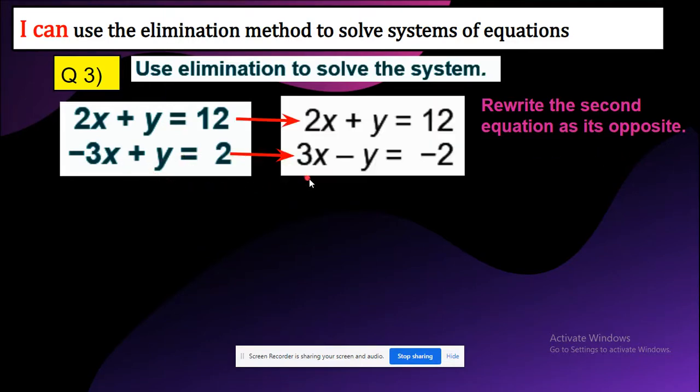So negative 3x is going to be positive 3x, positive y is going to be negative y, positive 2 is going to be negative 2. All we did is make positive negative and negative positive. You're only going to change the second equation, not the first one. The first one is going to be exactly the same.